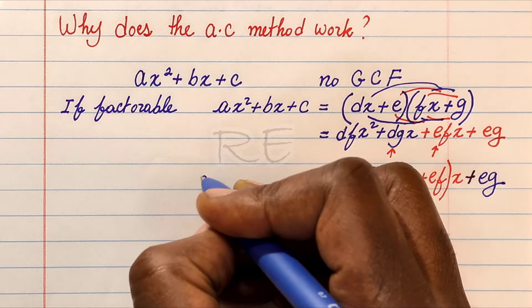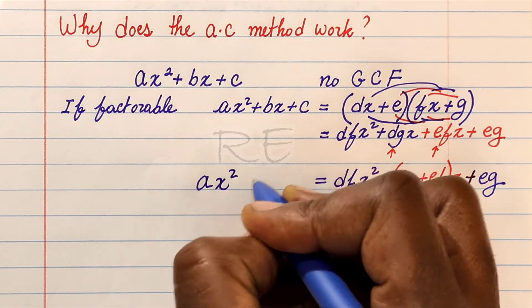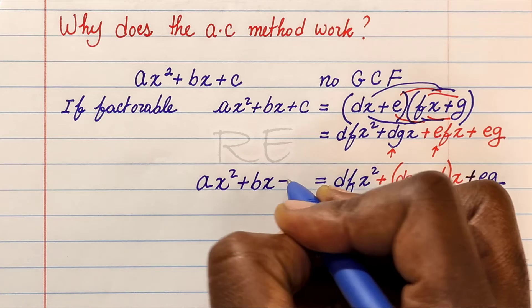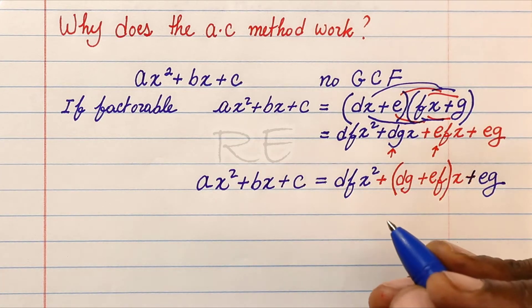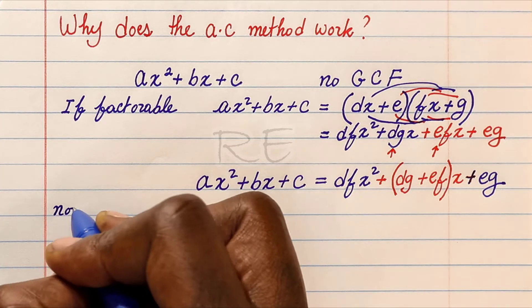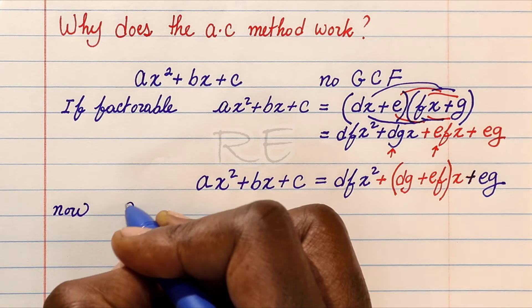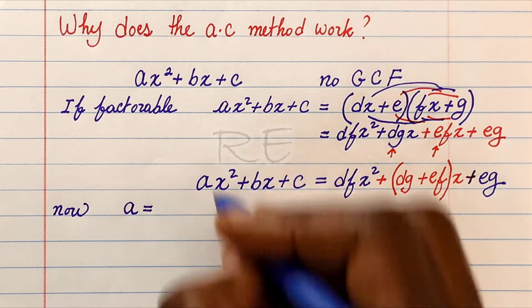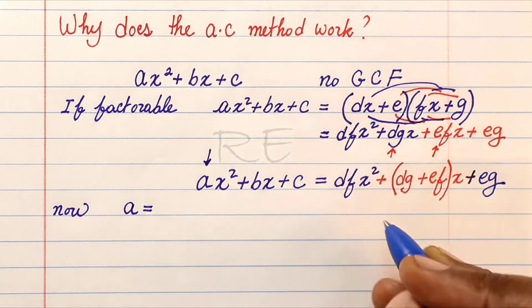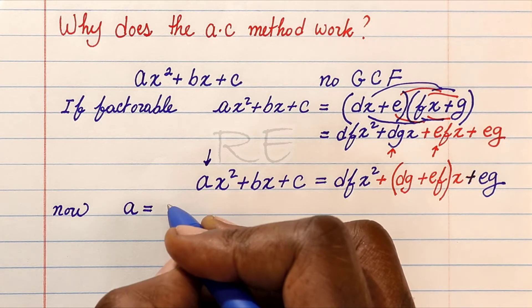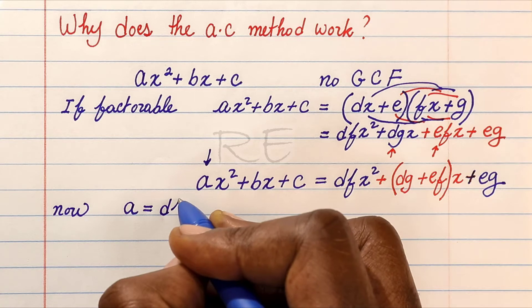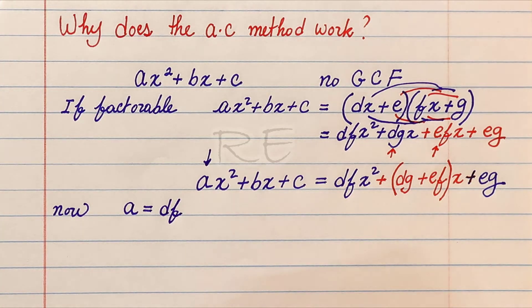Then we must realize that this is what ax squared plus bx plus c is equal to. Let's compare the terms. A will be the coefficient of x squared, so a will be equal to df.